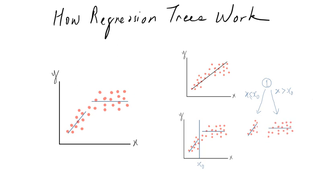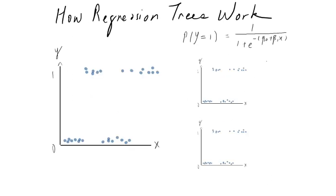Now let's look at another example. Suppose we want to do logistic regression with this data. As you know, logistic regression is similar to linear regression except that the response variable is categorical rather than continuous. If we were to attempt a simple logistic regression, the fit of the logistic curve would look something like this. As you can see, the variation of the data in this part of x is not captured adequately by the logistic curve.